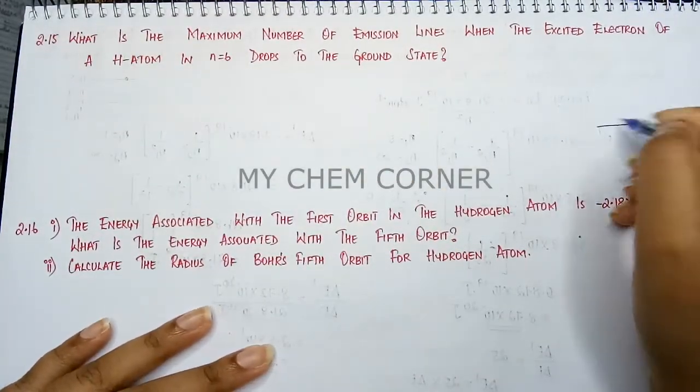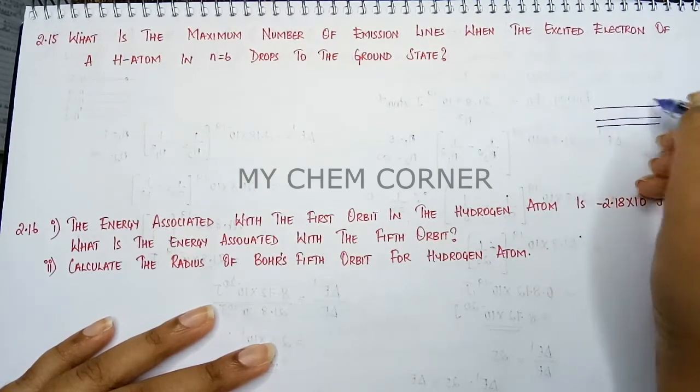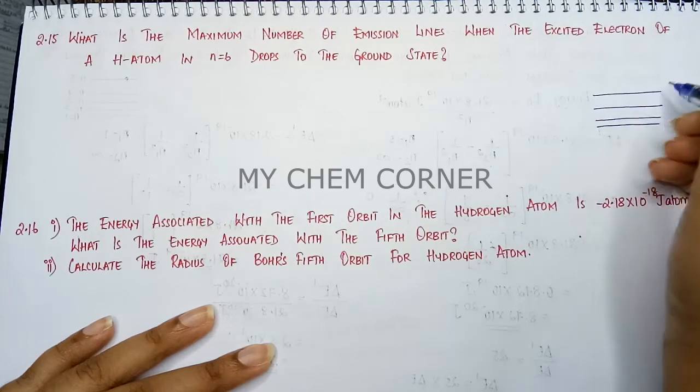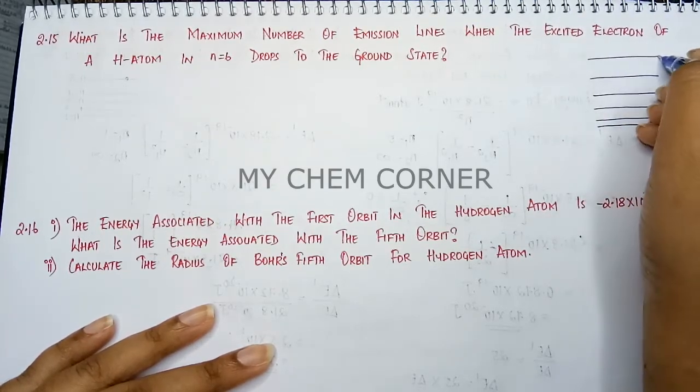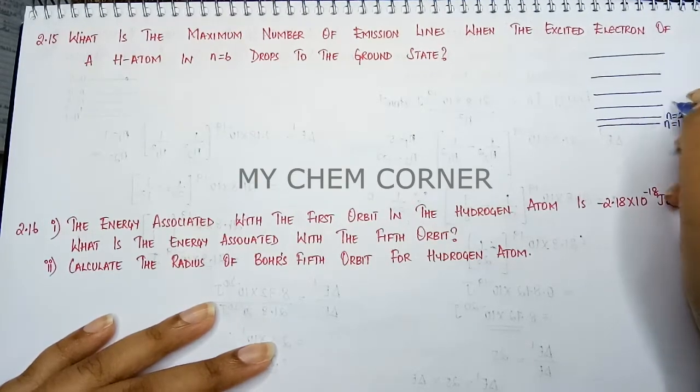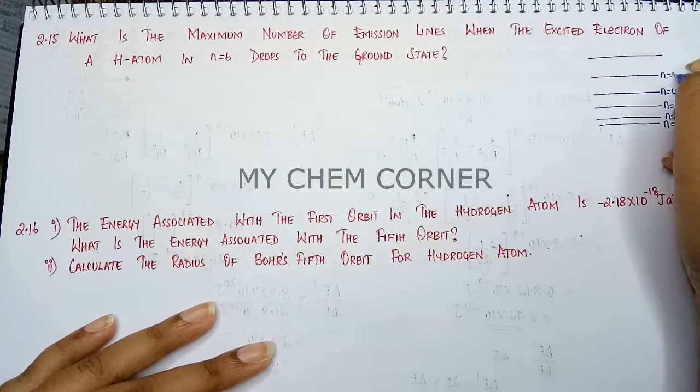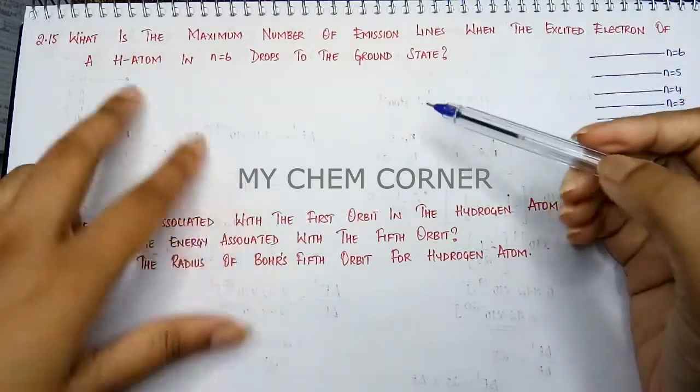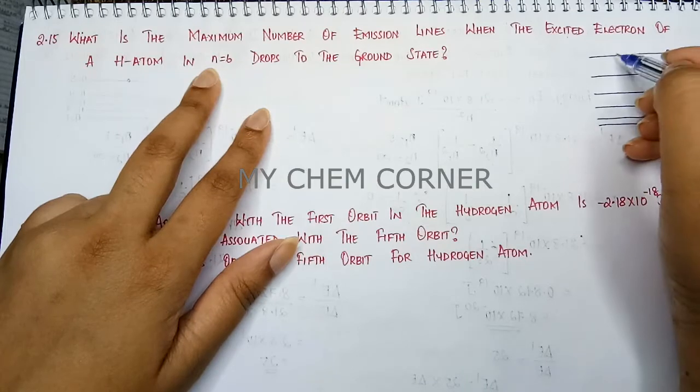I'm just drawing the levels here. I need to reach up to the sixth level. This is the fifth one and this is the sixth one. So when I name them: n equals 1, n equals 2, 3, 4, 5, and 6.